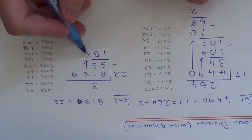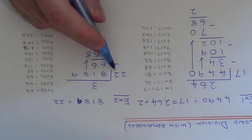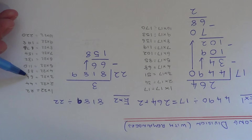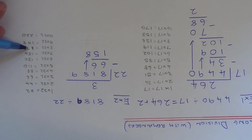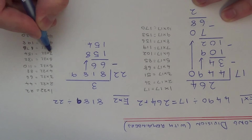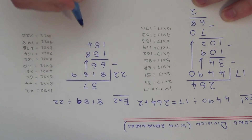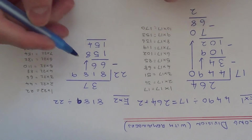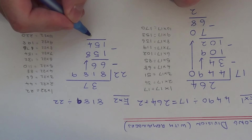Next we need to work out 158 divided by 22. Go through your multiples until you find the best one: 22, 44, 66, 88, 110, 132, 154, 176 — that's too big. So 154 is our best one. Write that underneath — 154 is 7 times 22, so write the 7 at the top. Take these two numbers away: 158 take away 154 gives 4.